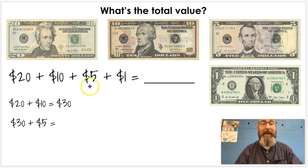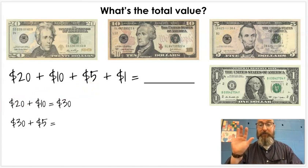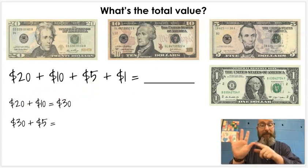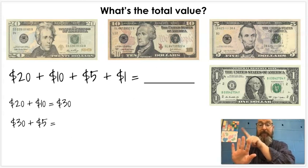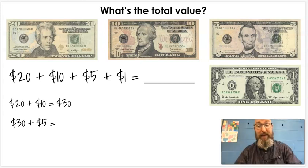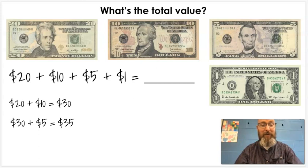Next, we're going to take that thirty and we're going to add the five. We can use fingers for this, although you may already know it. If you don't, we can add the fingers. Thirty-one, thirty-two... And how much is that? Thirty-five. That's right.